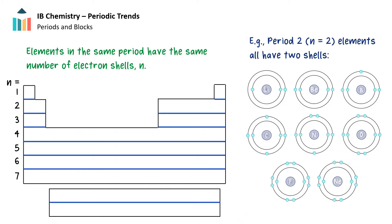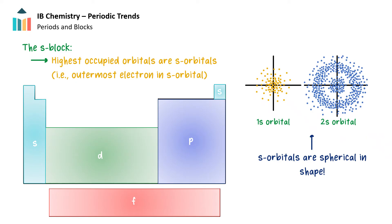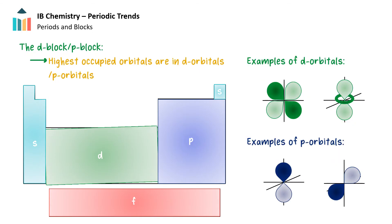Now that we've talked about groups, let's talk about periods. Elements in the same period have the same number of electron shells, sometimes represented by the letter n. So all elements in period 2 have two occupied electron shells. The periodic table is also separated into blocks depending on what kind of orbital is occupied by the outermost electron. For groups 1 and 2, the highest energy occupied orbitals are the s orbitals — these elements are referred to as the s block. The d block metals have the highest energy occupied orbitals as d orbitals. After the d block is the p block, comprising elements for which the highest energy electrons are found in the p orbitals.